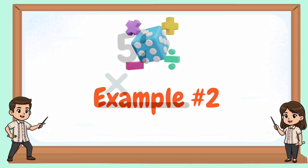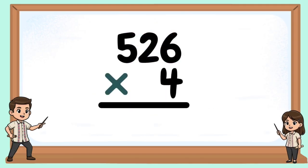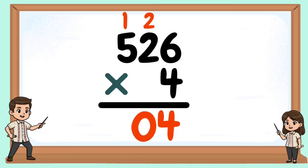Example number 2: 526 times 4. 4 times 6 equals 24 — bring down 4, carry 2. 4 times 2 equals 8, plus 2 is 10 — bring down 0 and carry 1. 4 times 5 equals 20, plus 1 equals 21. 2,104 is our product.